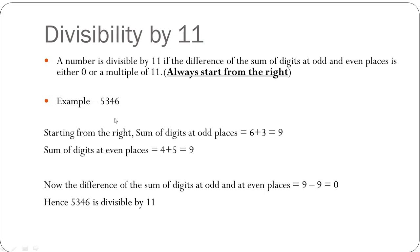Suppose the number is 5346. Starting from the right, the digits at odd places are 6 and 3, and their sum is 6 plus 3 which equals 9. The digits at even places are 4 and 5, so their sum is 4 plus 5 which equals 9. Now you find the difference of the two sums: 9 minus 9 gives 0. Since the difference is 0, the number 5346 is divisible by 11.